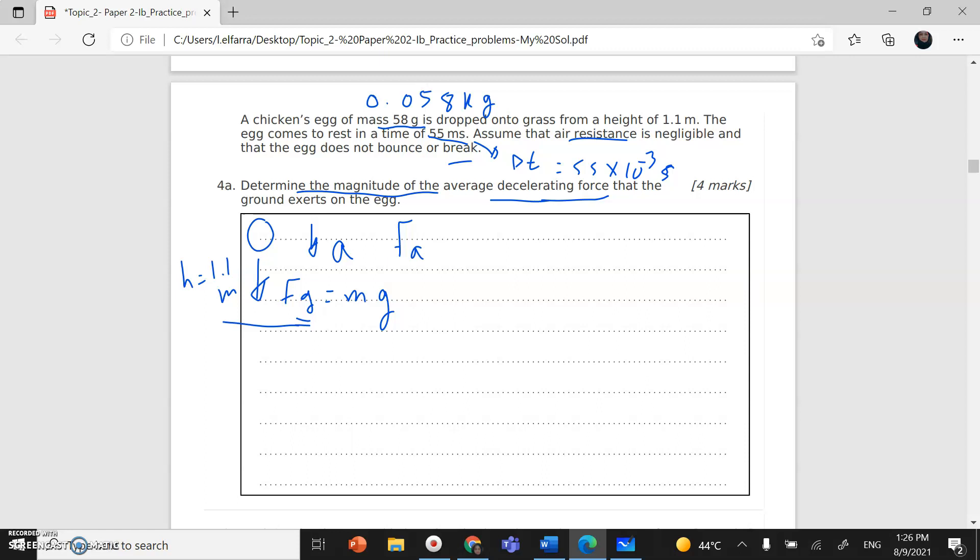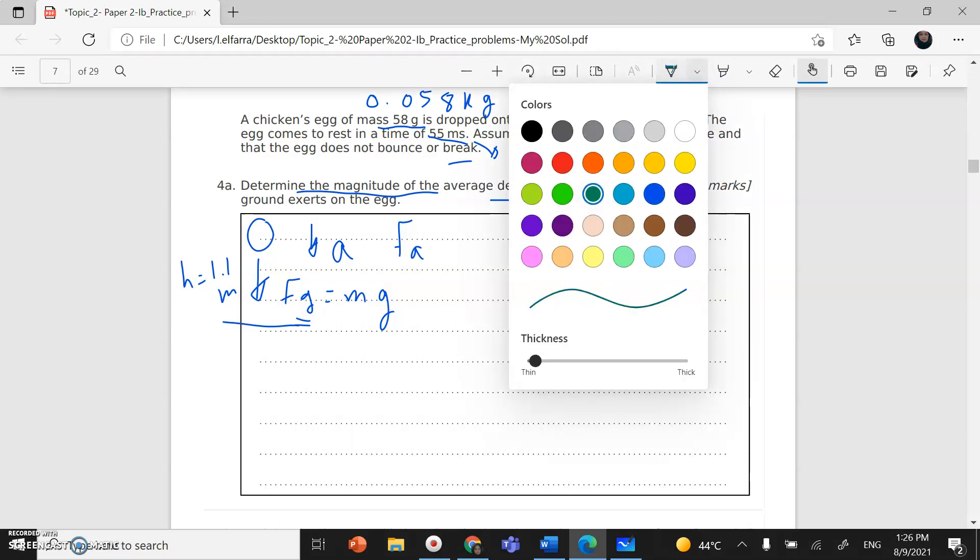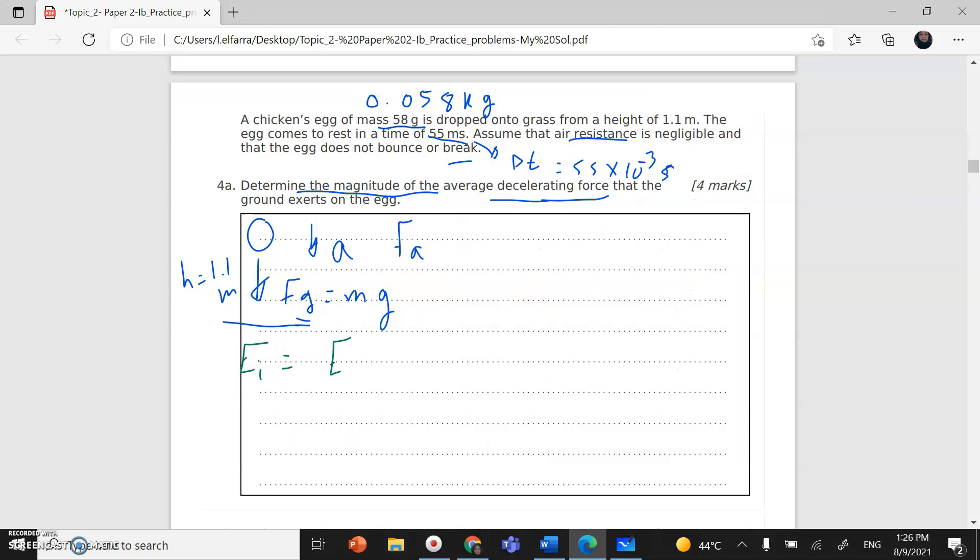First method, I can use the conservation of energy. Initial energy equals final energy. Initial energy at the maximum height is gravitational potential energy. This will convert to kinetic energy. MGH equals half MV square. I can cancel M from both sides.